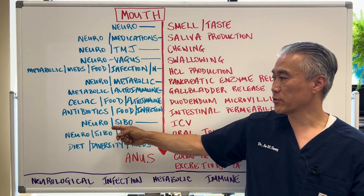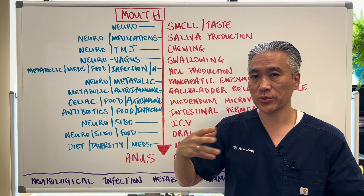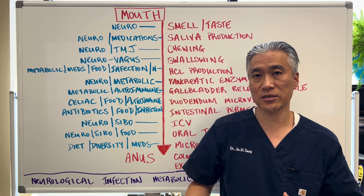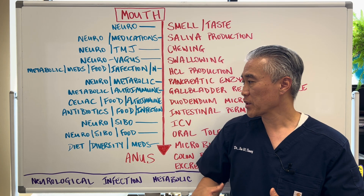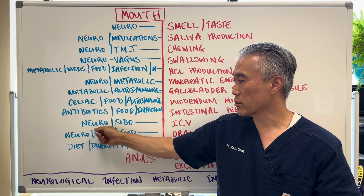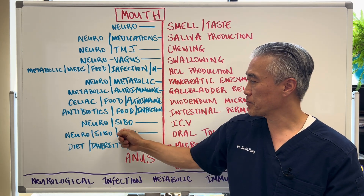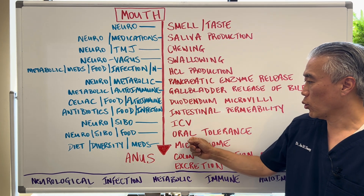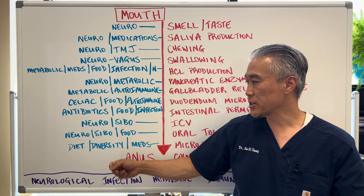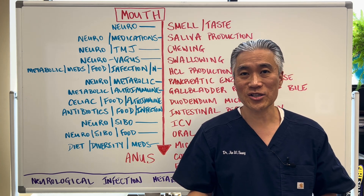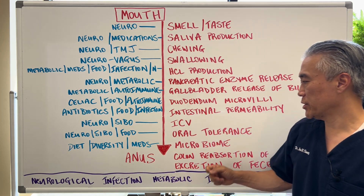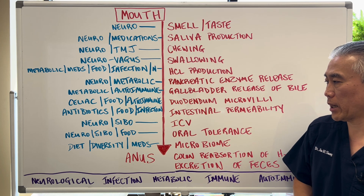The ileocecal valve can be neurologic. Often when people have a concussion, they can develop SIBO — small intestinal bacterial overgrowth — because the signaling from the brain to these areas can be impacted neurologically. Oral tolerance can be related to neurological issues, SIBO, food, or immunological issues. Diet, diversity, and medication will all impact the gut microbiome.